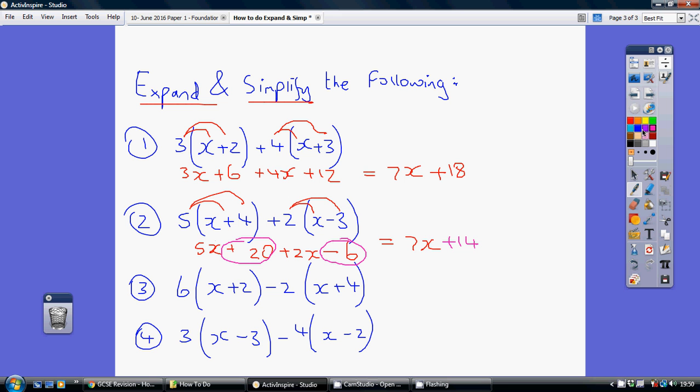Right. So then back to number 3. 6 times x, 6 times 2 is 6x plus 12. And then, these claws here. Minus 2 times x minus 2 times 4 is minus 2x minus 8. Then we gather up. 6x take away 2x is 4x. And 12 take away 8 is plus 4.